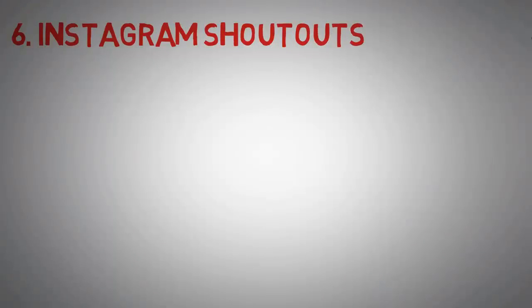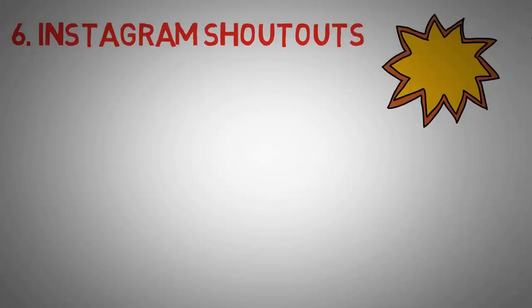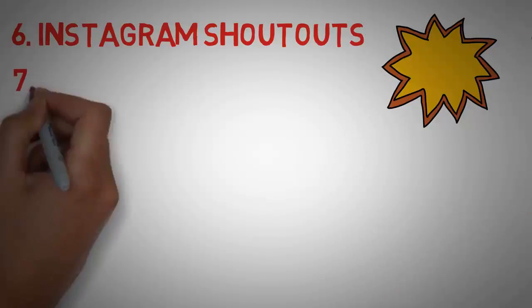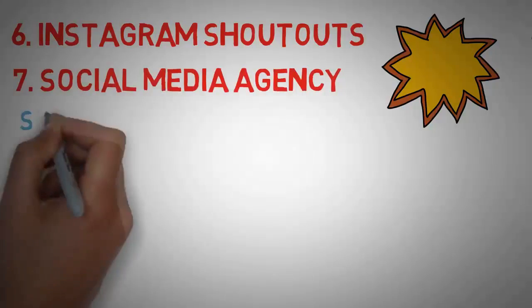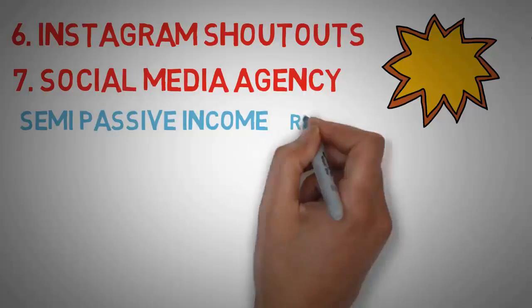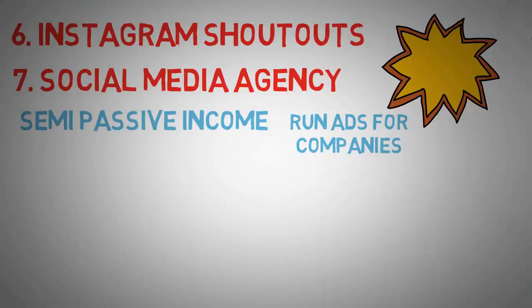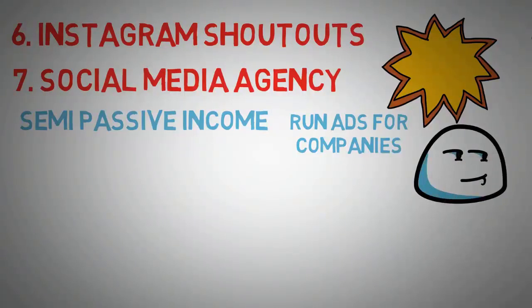Number six is Instagram shoutouts. Now we mentioned this before and there's actually a lot more to it, so I recommend you watching that video in the playlist. Number seven is a social media agency. Now this is semi-passive because you still have to produce content for other companies, but basically you do Facebook ads for local companies as long as you know how to do it right. You can become a Tai Lopez minion and sign up for his course. Now I doggone him, but he really does have a lot of great advice. Just not everyone will be able to become a social media agency gazillionaire.